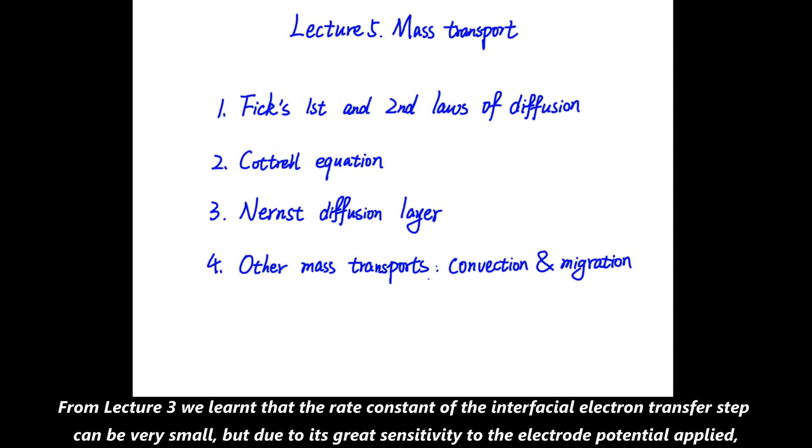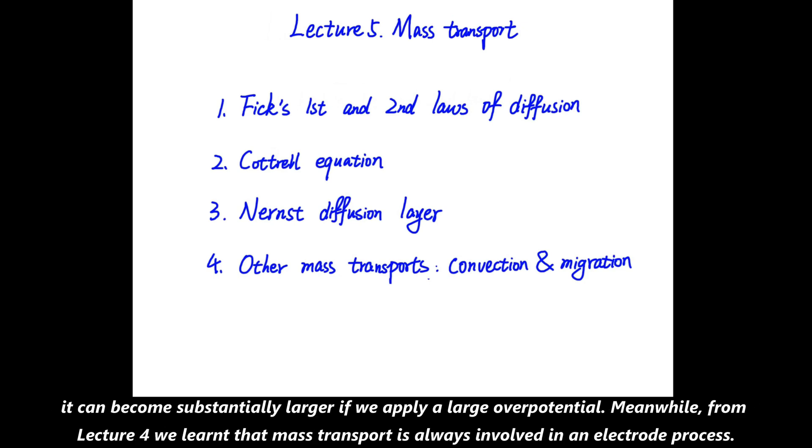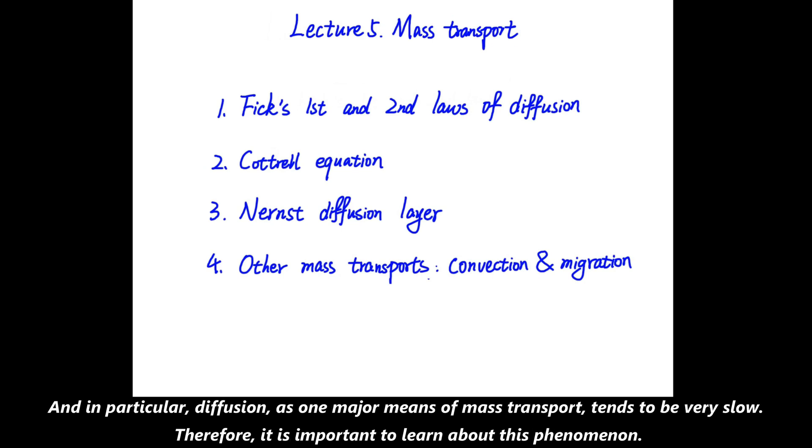From lecture 3, we learned that the rate constant of the interfacial electron transfer step can be very small, but due to its great sensitivity to the electrode potential applied, it can become substantially larger if we apply a large overpotential. Meanwhile, from lecture 4, we learned that mass transport is always involved in an electrode process, and in particular, diffusion as one major means of mass transport tends to be very slow.